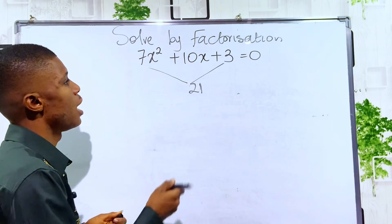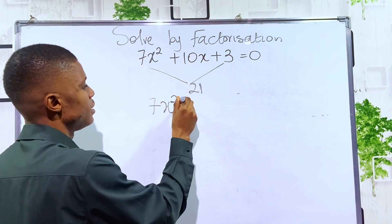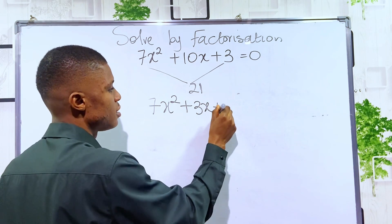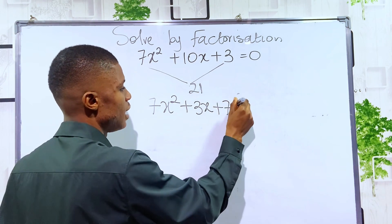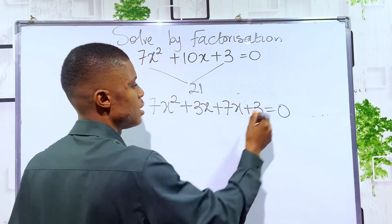So to expand the middle term now, we have 7x squared plus one of the factors, 3x, plus the other factor, 7x, then plus the last term, 3, equals 0.